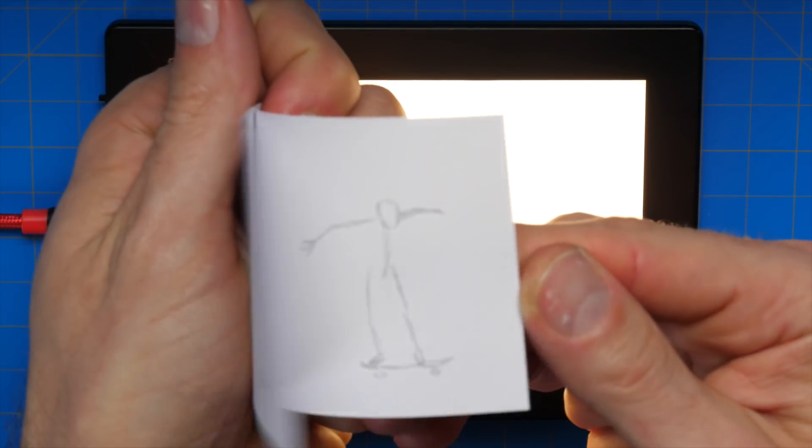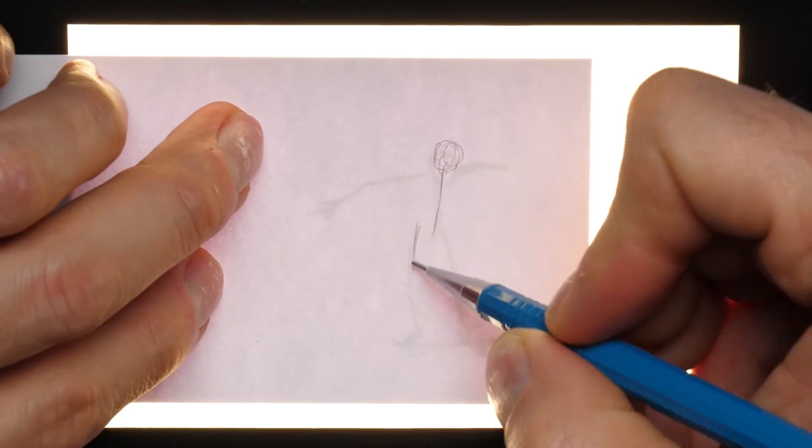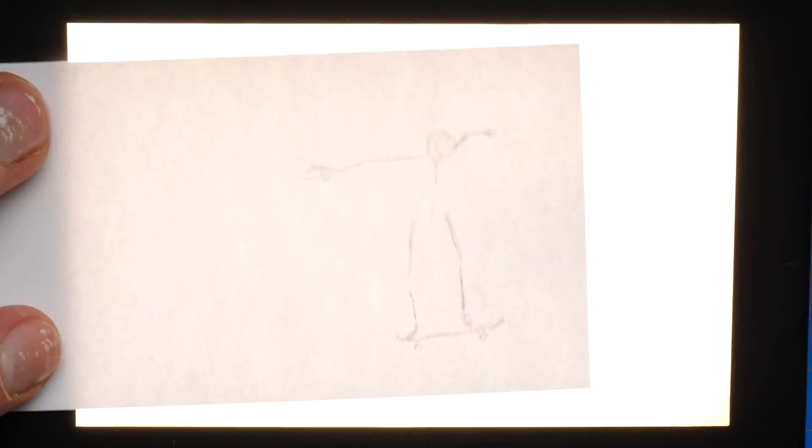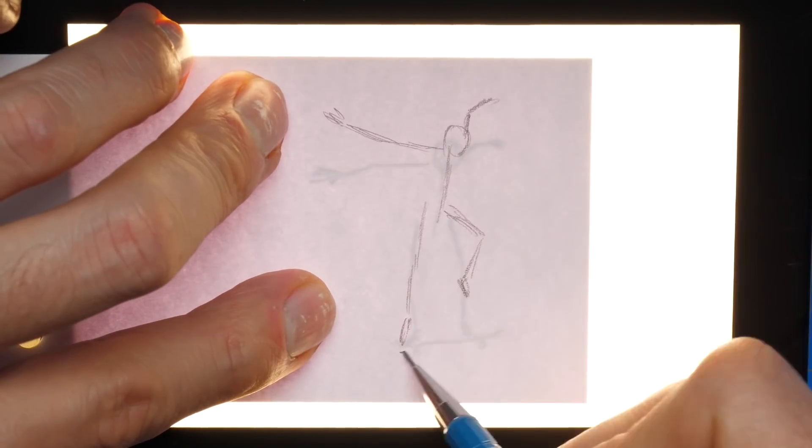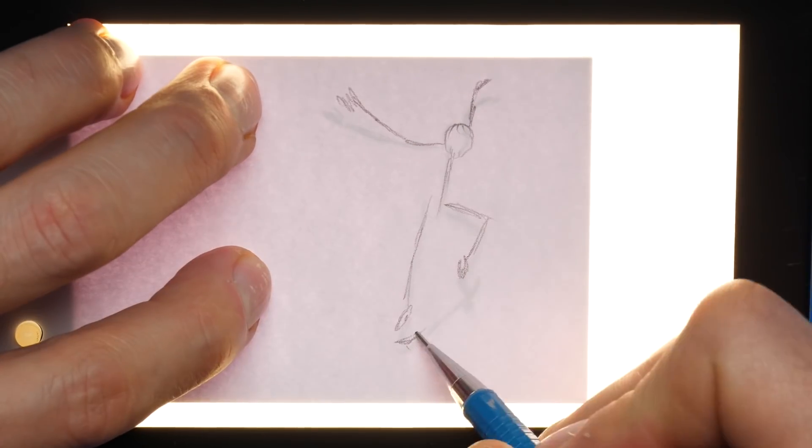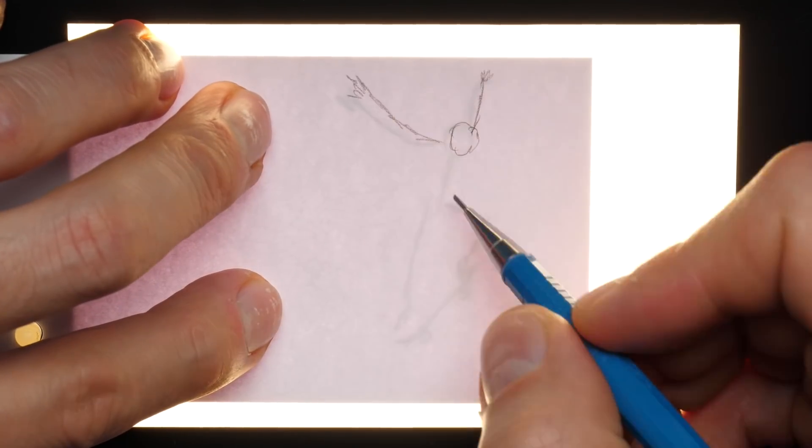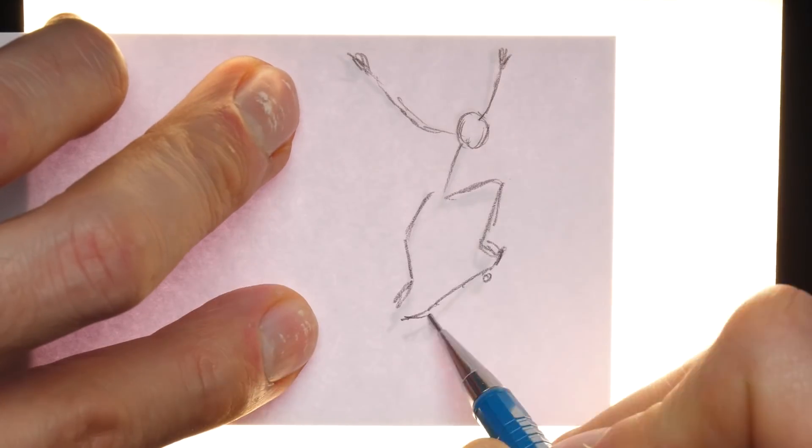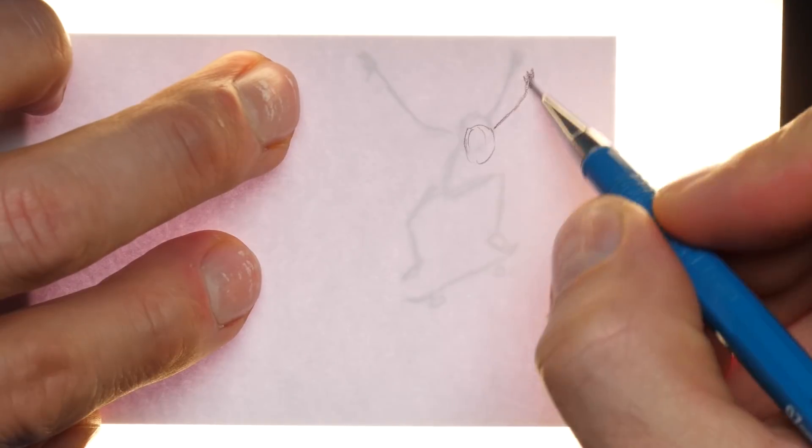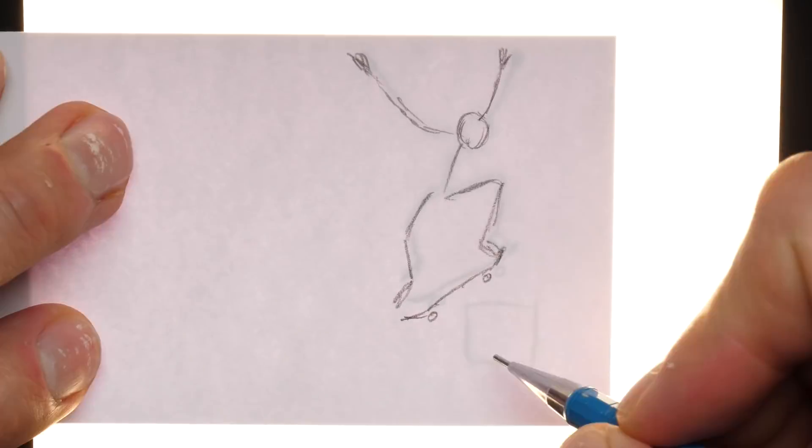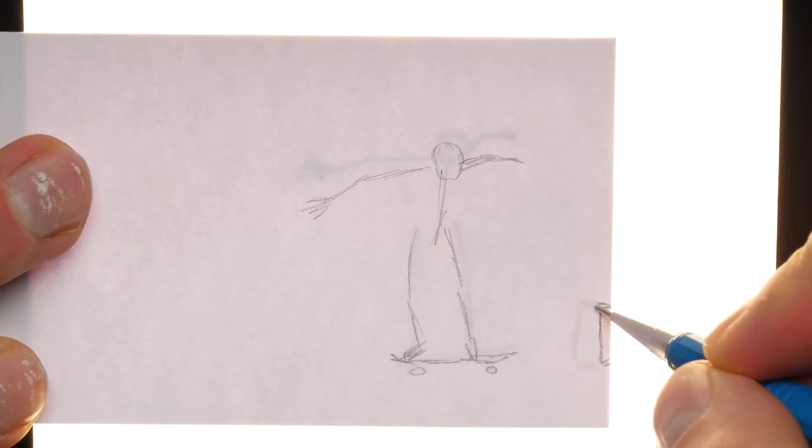One thing I want to show you guys in regards to animation as I do this is how sometimes it's important to exaggerate your animation compared to real life. So since I'm using video reference here, I also want to think about how I might want to exaggerate what I'm seeing. So I'm going to make this flipbook twice and I'll show you the difference, show you what I'm talking about.